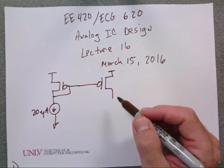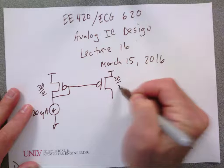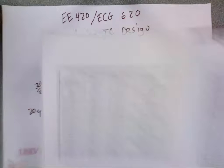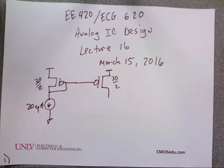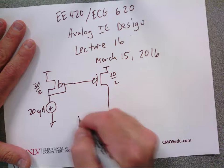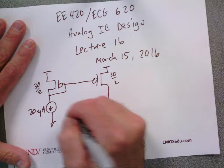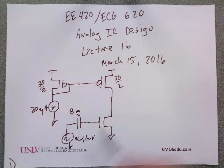Assuming this is in saturation, how much current flows in it? Let's go 30 by 2, 20. It's the same as 10 by 2, 20 — the exact same. So I don't need to do any V_GS calculations. I'm going to come over here and put a transistor and connect it to V_in, which is 1 millivolt. And I'm going to say this is big.